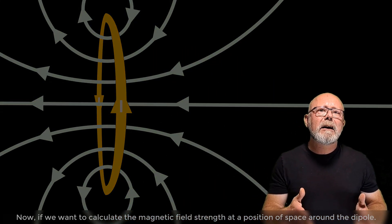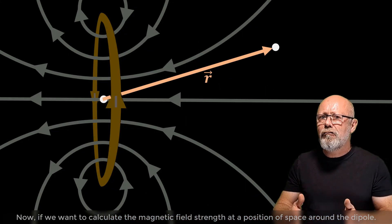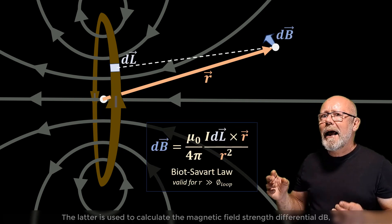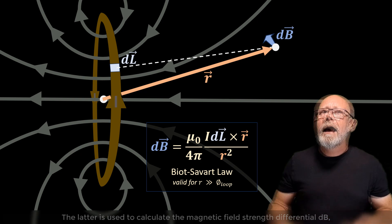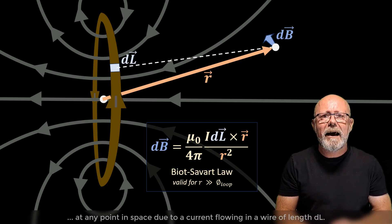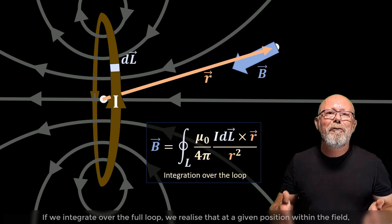Now, if we want to calculate the magnetic field strength at a position in space around the dipole, we can use Biot-Savart's law. The latter is used to calculate the magnetic field strength differential, db, at any point in space due to a current flowing in a wire of length, dl.